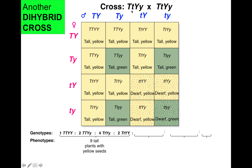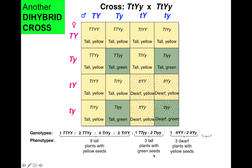Here's another dihybrid cross. This time we're crossing tall and yellow peas — a heterozygote crossed with another heterozygote, similar to an F1 self-crossing portion of Mendel's experiment. Using the Punnett square, we can predict that we would get nine tall plants with yellow seeds, three tall plants with green seeds, three dwarf plants with yellow seeds, and one dwarf plant with green seeds.